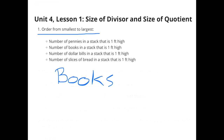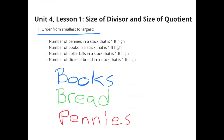Since most books are thicker than pennies, dollar bills, and slices of bread, there would be fewer books in a stack that is 1 foot high. The next fewest would be slices of bread, because they are thicker than both pennies and dollar bills. Pennies are thicker than dollar bills, and the thinnest of them all are dollar bills — so you would be able to fit the most dollar bills in a 1-foot stack.